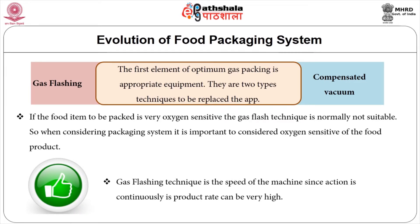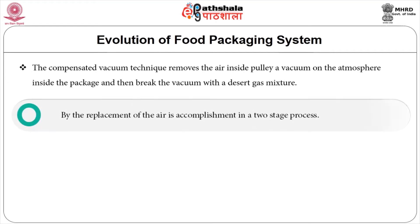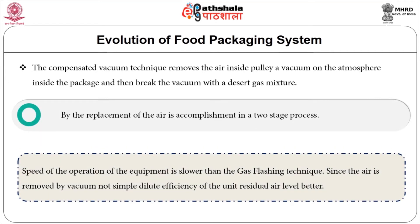Therefore, if the food item to be packed is very oxygen sensitive, the gas flush technique is normally not suitable. When considering a packaging system, it is important to consider the oxygen sensitivity of the food product. The great advantage of gas flushing is the speed of the machine — since the action is continuous, the product rate can be very high. The compensated vacuum technique removes air by pulling a vacuum on the atmosphere inside the package and then breaks the vacuum with a desired gas mixture.